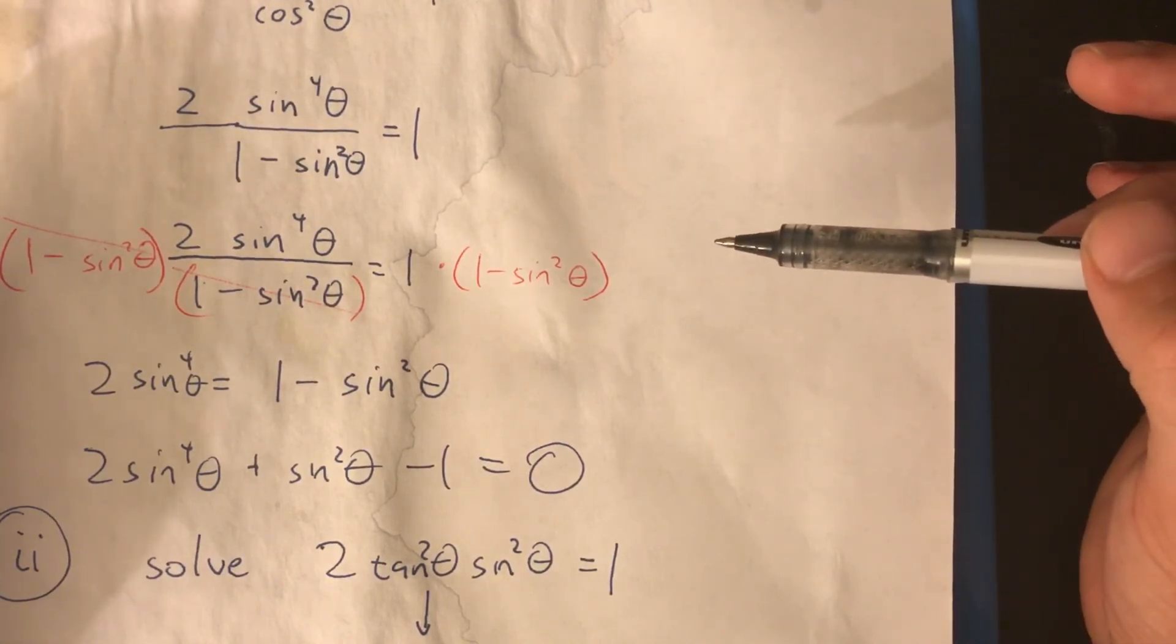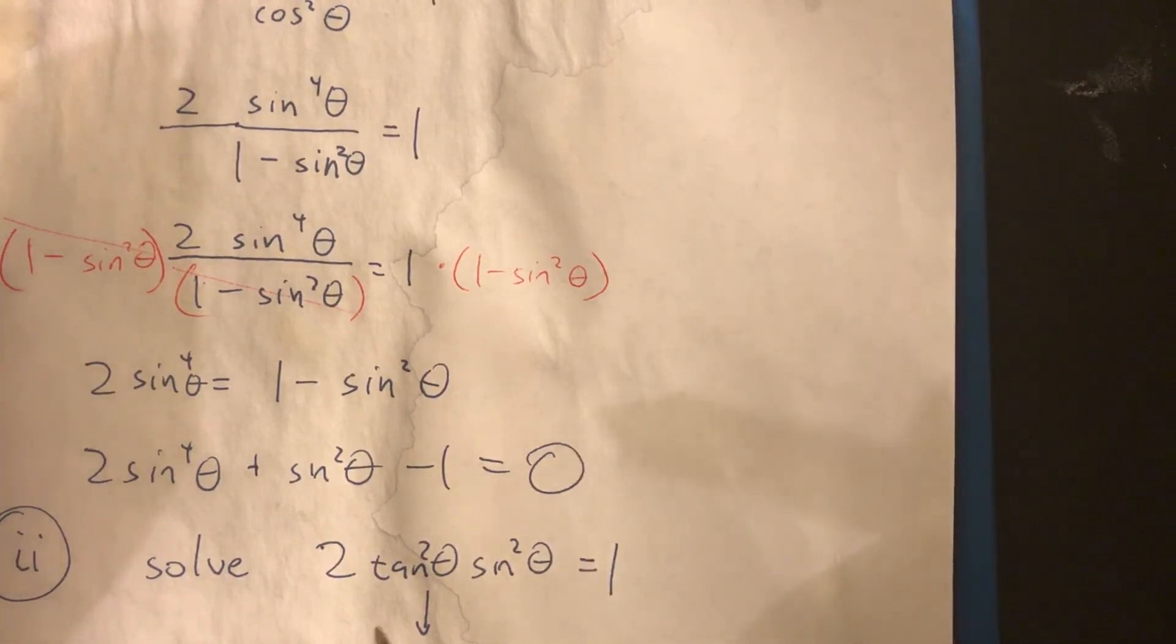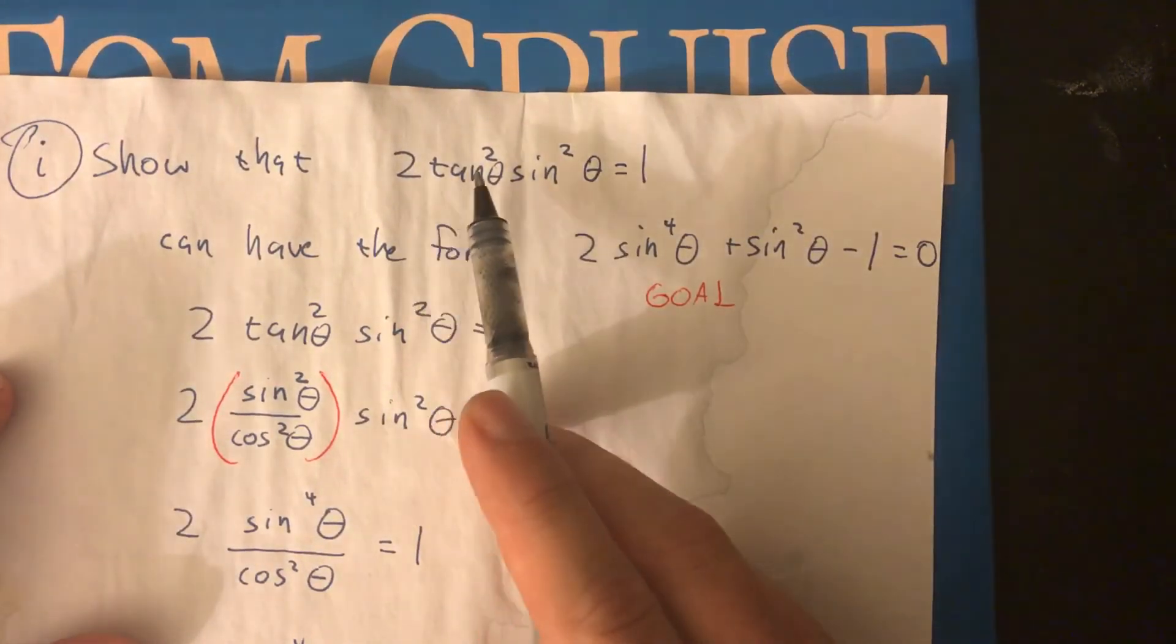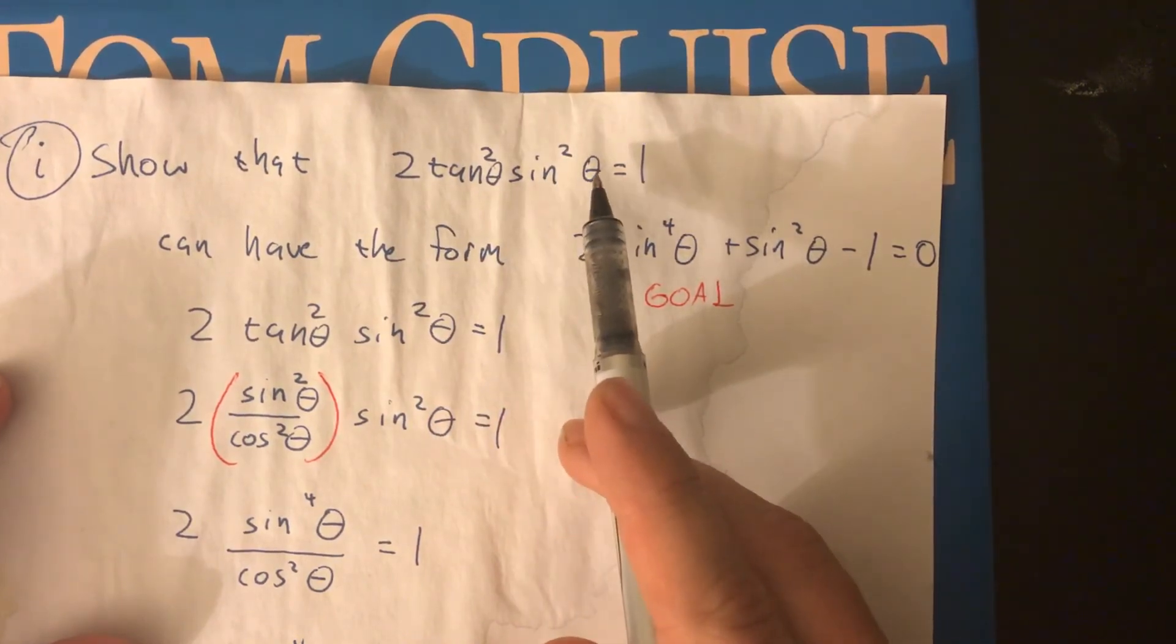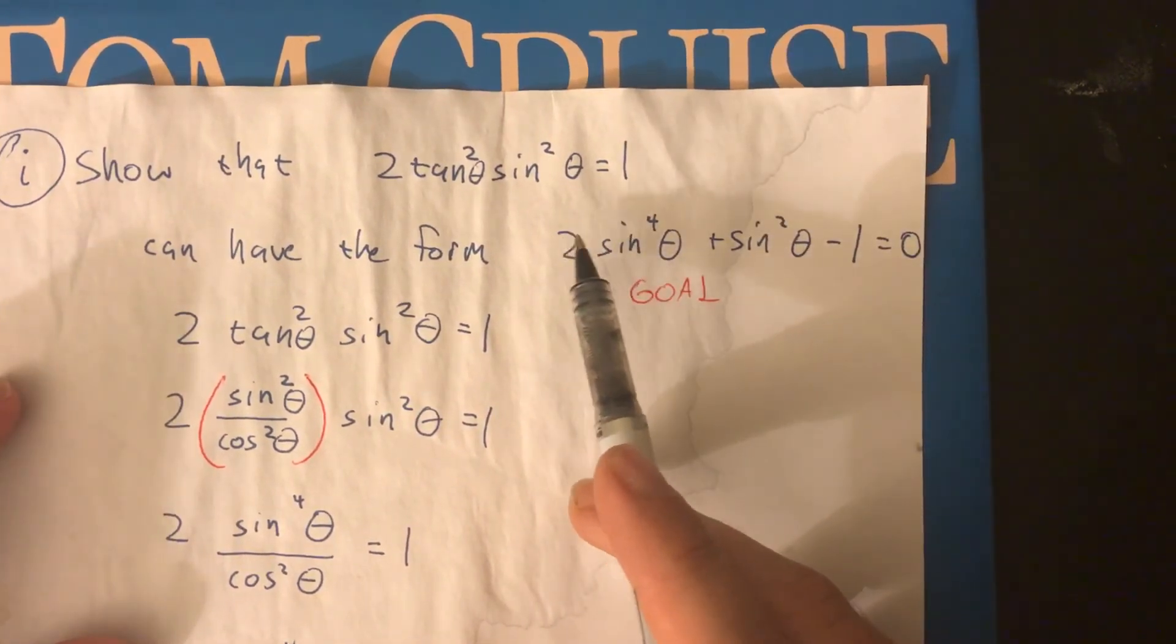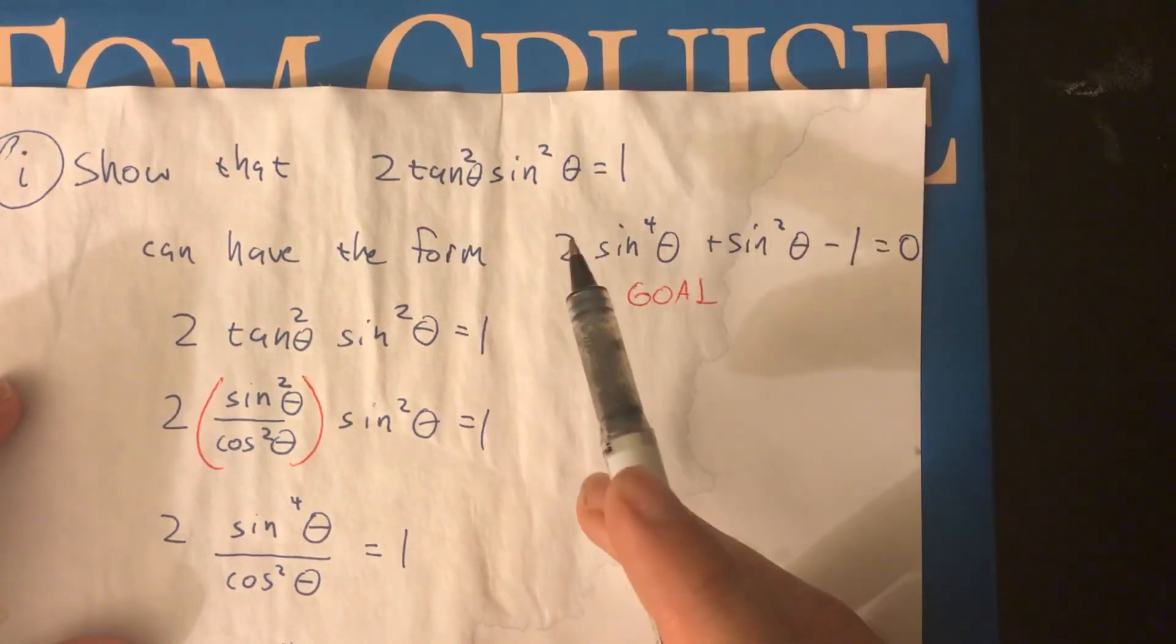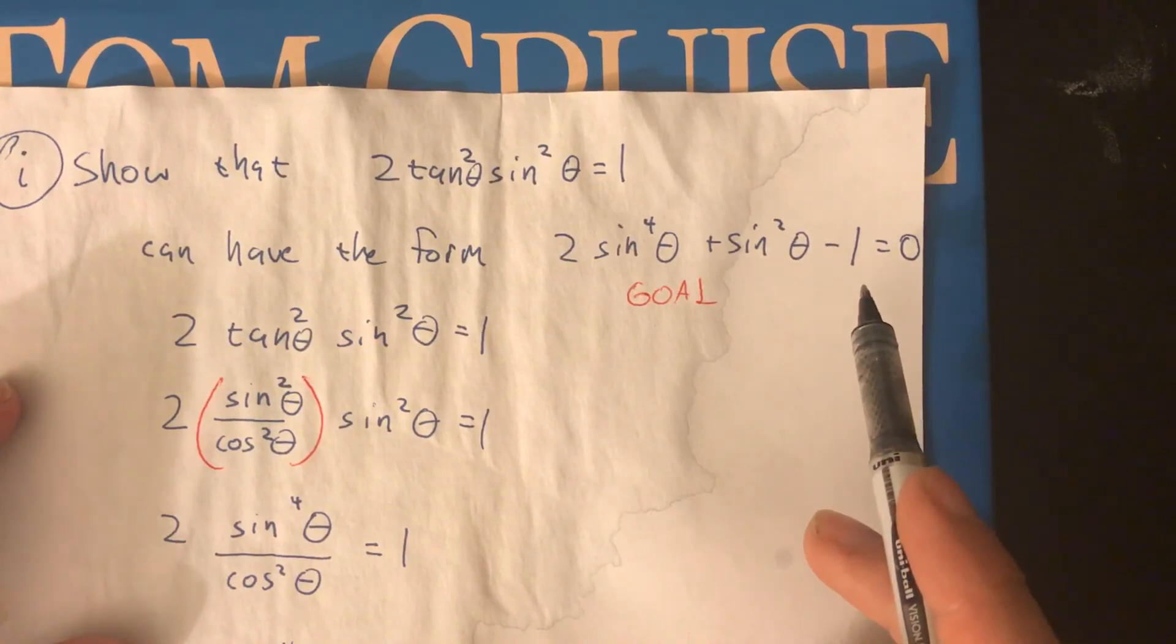Here's the thing, though. They don't want you to jump in and actually try to solve the equation they ask about in the part two problem. Instead, they want you to use what you figured out in part one to change the equation of the expression to solve something easier. So, you know how in part one, we showed that two tan squared theta, sin squared theta equals one is the same as this equation over here. Therefore, if you want to solve this, you can just solve this other one. They're equivalent equations.